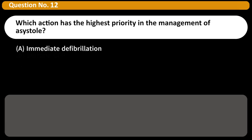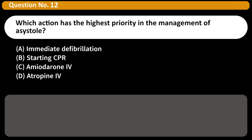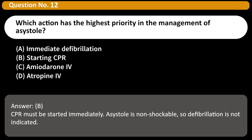Which action has the highest priority in the management of asystole? A. Immediate defibrillation. B. Starting CPR. C. Amiodarone IV. D. Atropine IV. Answer: B. CPR must be started immediately. Asystole is non-shockable, so defibrillation is not indicated.